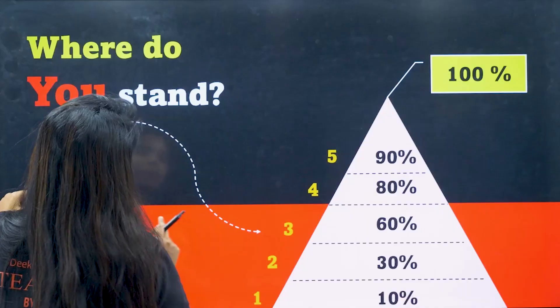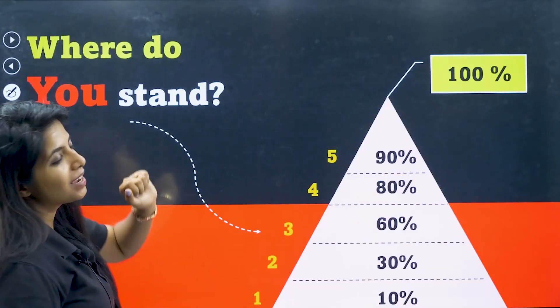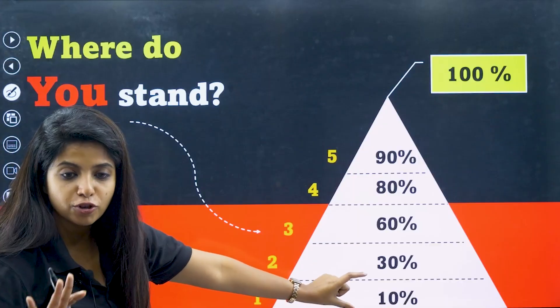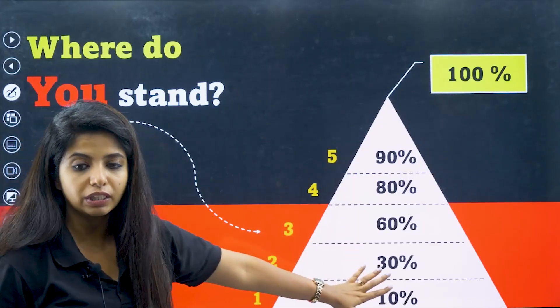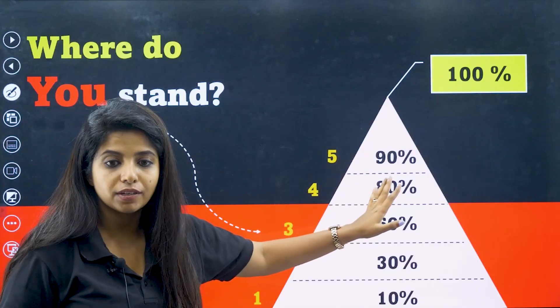I hope we are ready, and let me ask you a question before I go ahead with this video: Where do you stand? Level 1 is 10% of your portions completed. Level 2, 30%. Level 3, 60%. Level 4, 80%. Level 5, 90%.